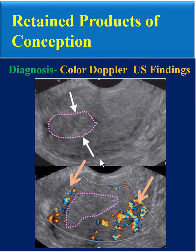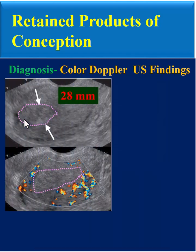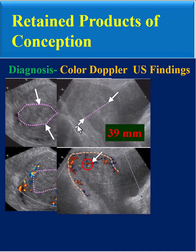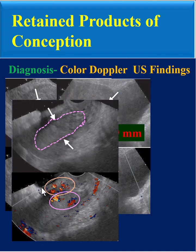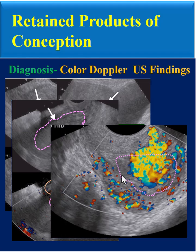We must also know color Doppler ultrasound findings, and according to grayscale and color Doppler ultrasound findings we must differentiate the types of RPOC, including RPOC type 0, type 1, type 2, and finally type 3.